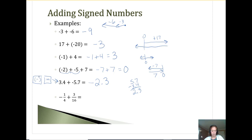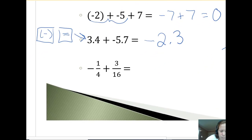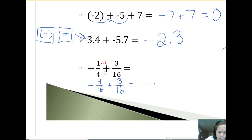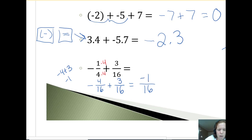The last adding one has a fraction — a good review of fractions. When adding, we need a common denominator. Bring down the negative. The common denominator is 16, so I change one-fourth to four-sixteenths: negative four-sixteenths plus three-sixteenths. Going straight across, keep the 16 as the denominator. Negative four plus three — different signs, so take the difference: that's negative one-sixteenths.